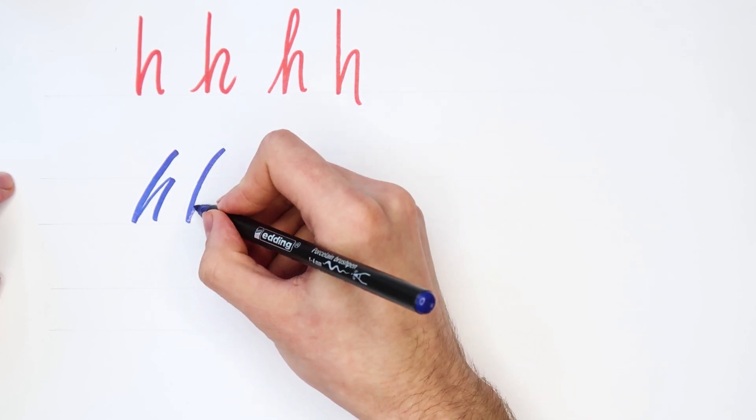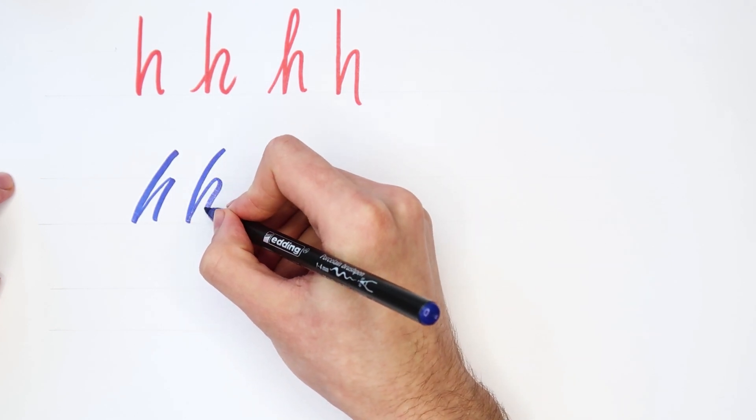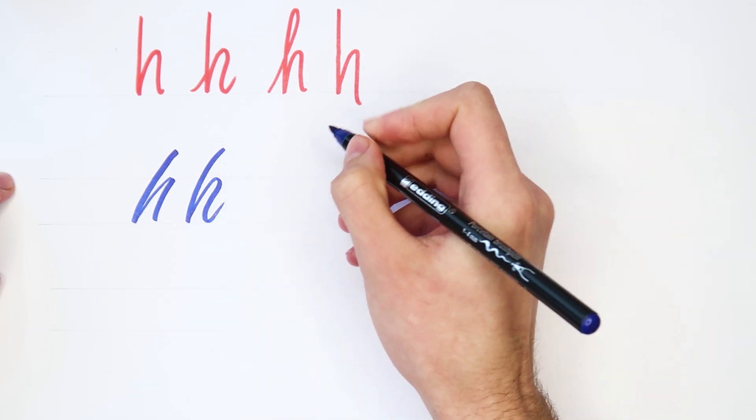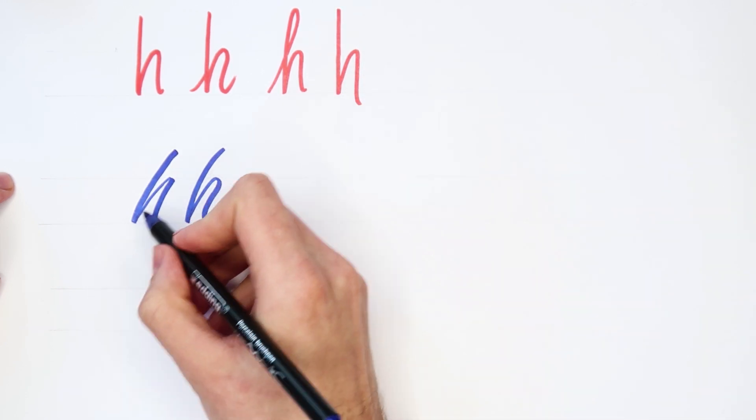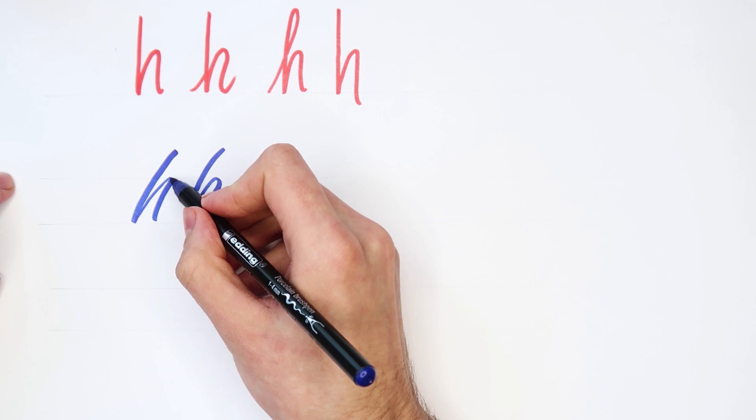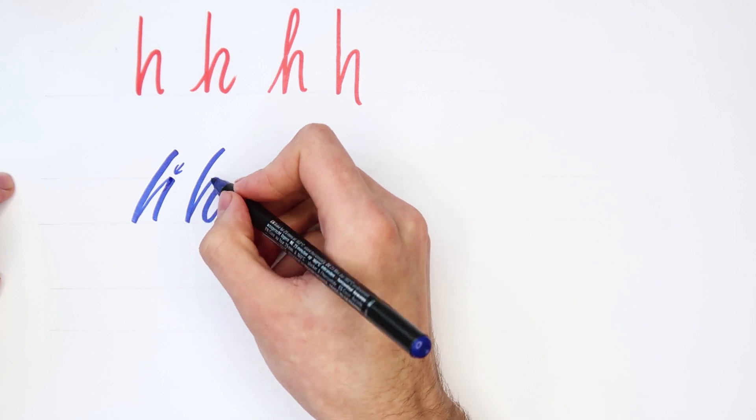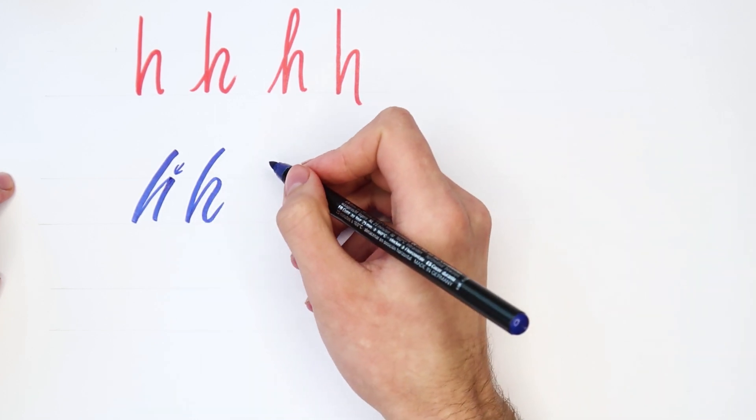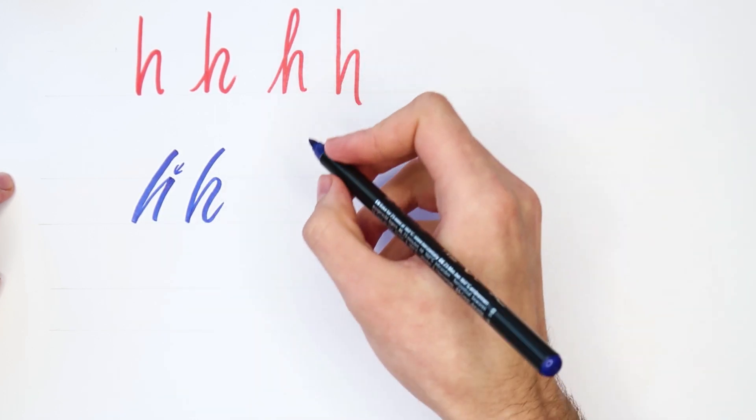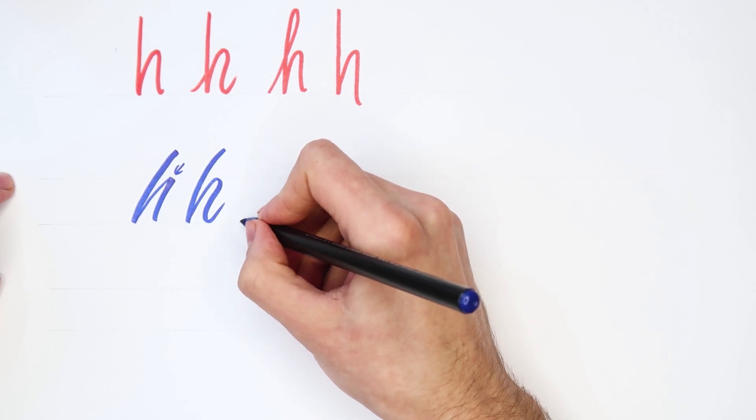We can also do it like this. Yeah so you see you can make this part here not straight but a little bit curved that can also look nice. And let's try the last one.